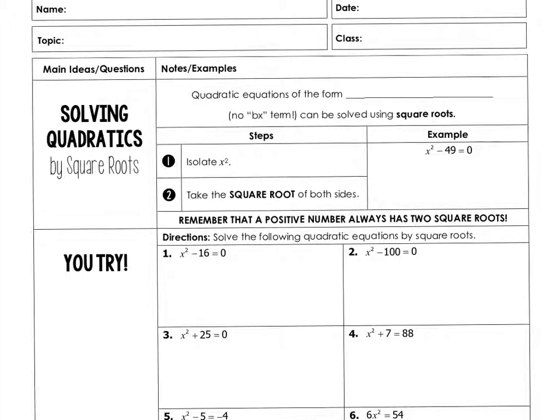We solve a specific set of quadratic equations by square roots. The specific type of quadratic equations that we can solve by square root are quadratics of the form ax² + c. Those are the ones that have no bx terms.